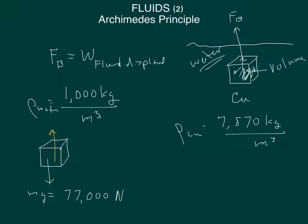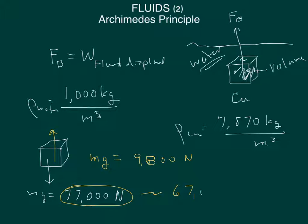The buoyant force pushing up would be the weight of the water displaced, which is Mg, and we have a mass of 1,000 kilograms. So Mg would equal 9,800 newtons. So the weight of the block outside the water would be 77,000 newtons. In the water, we would subtract almost 10,000 newtons and be on the order of 67,000 newtons. So it is much lighter in the water, and this is because of the buoyant force.